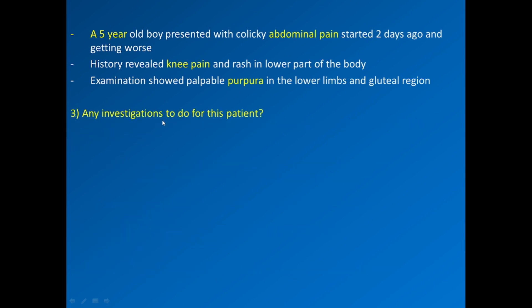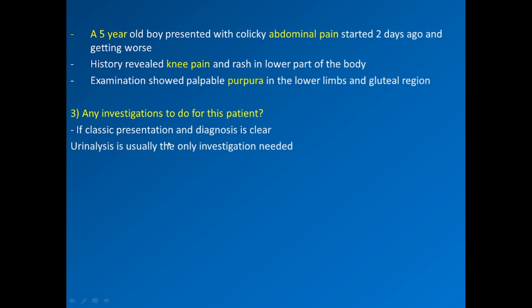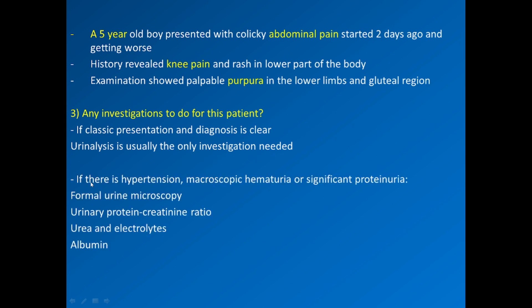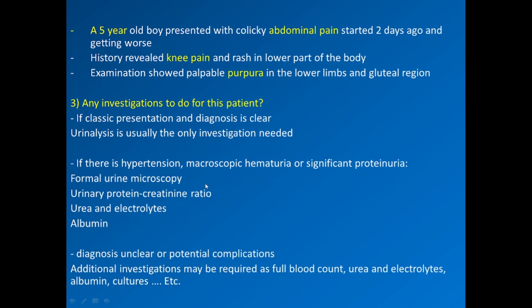What investigations should be done for this patient? If the presentation is classic and diagnosis is clear, urine analysis is usually the only investigation needed. But if there is hypertension, microscopic hematuria, or significant proteinuria, formal urine microscopy and urine protein-creatinine ratio are needed, along with urea, electrolytes, and albumin. Other investigations — such as blood count, cultures, and immunological investigations — may be done if the diagnosis is unclear or potential complications exist.